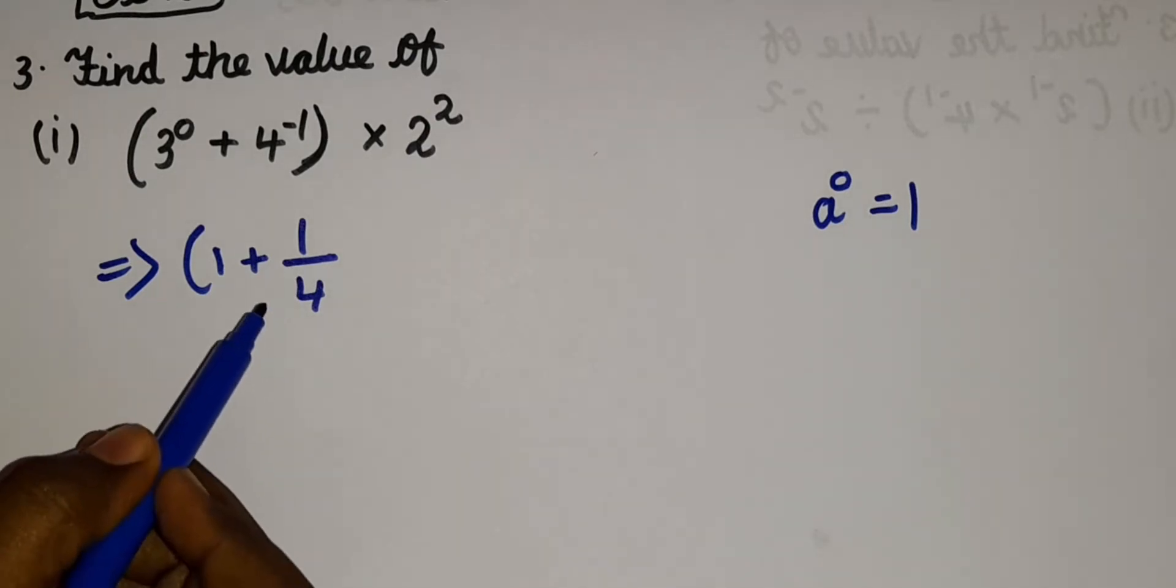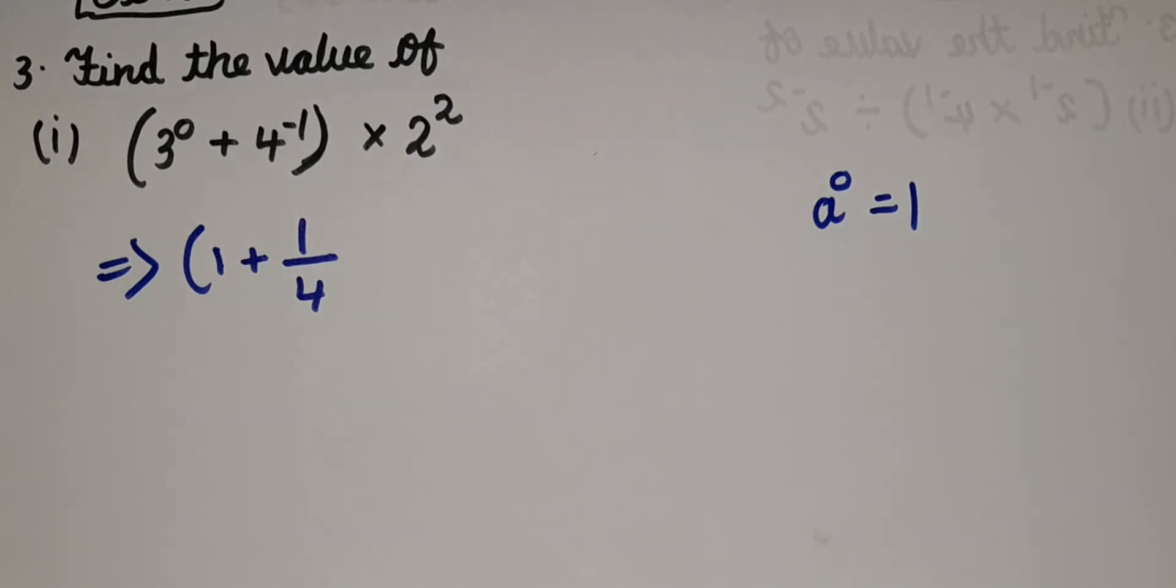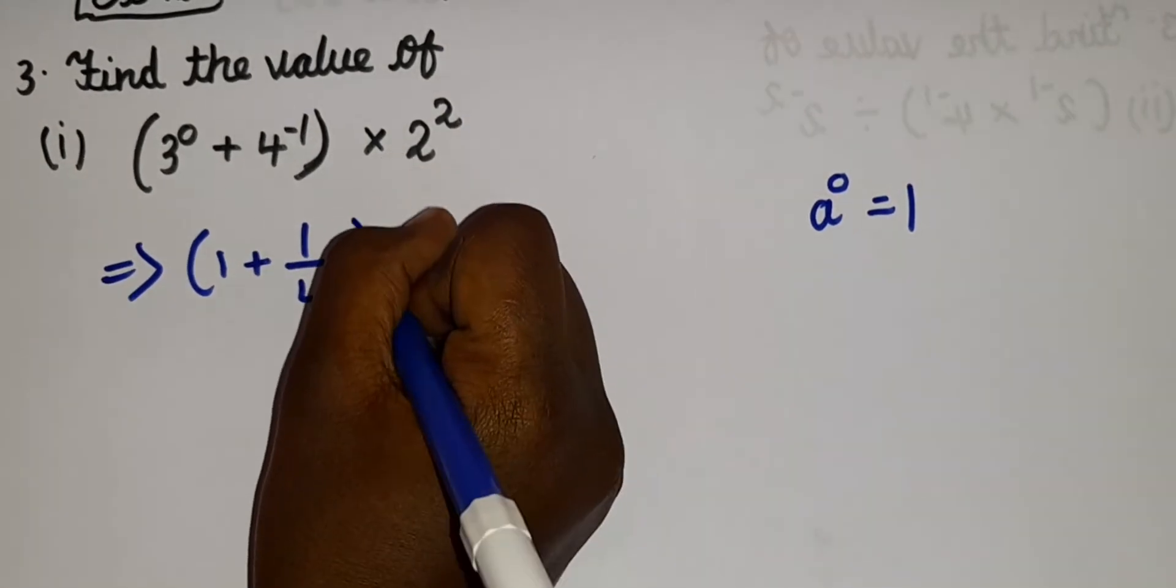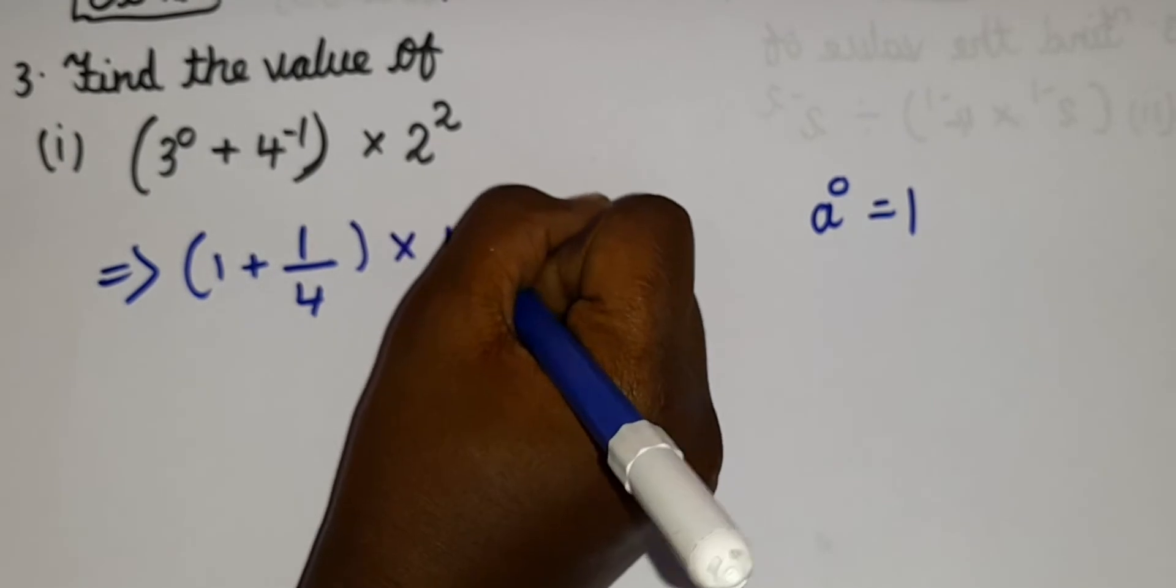That's why no need of writing it. So now what we should do is we can close the bracket into 4. So I hope you can understand this, how did this 4 come?